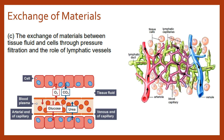Key to understanding how all of this works is to understand that all of our body cells are surrounded by tissue fluid. The tissue fluid is the interface between the cells and the capillaries — the blood plasma. So anything leaving the plasma and going to the cell must first pass through the tissue fluid, and equally anything leaving the cell to enter into the blood vessel must also pass through that tissue fluid.